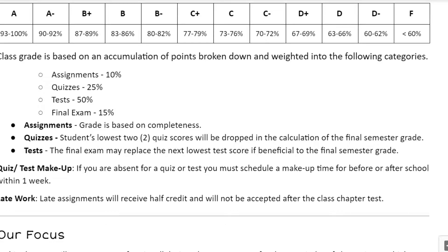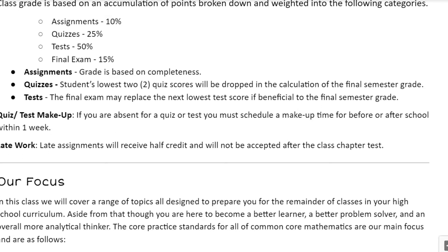The final exam, per Clio High School, is 15% for all classes. Assignments are graded on completeness. Your lowest two quiz grades will be dropped when figuring out your final grade — once you take your third quiz, your lowest one will be dropped, and after your fourth quiz the next lowest is dropped. On tests, if your final exam grade is higher than your lowest chapter test grade, it will replace that if it's beneficial for you. If you're absent for a quiz or test, just get ahold of me — it needs to be made up within one week.